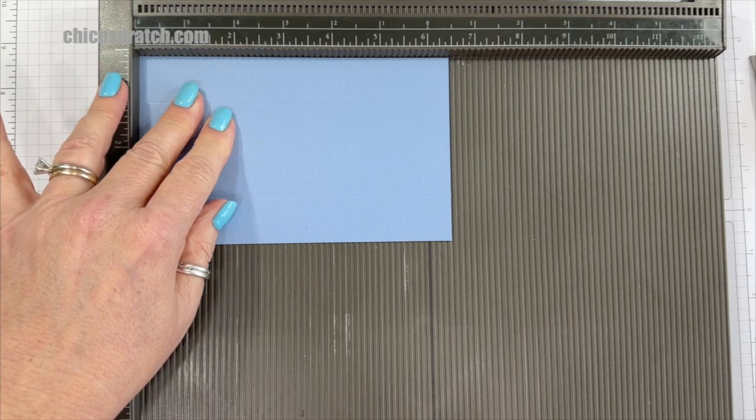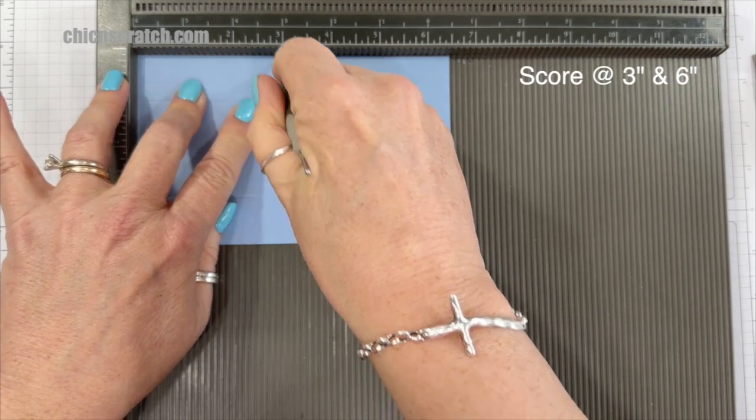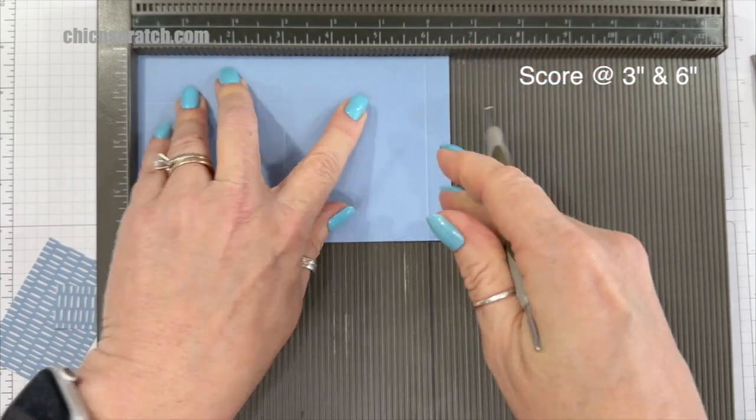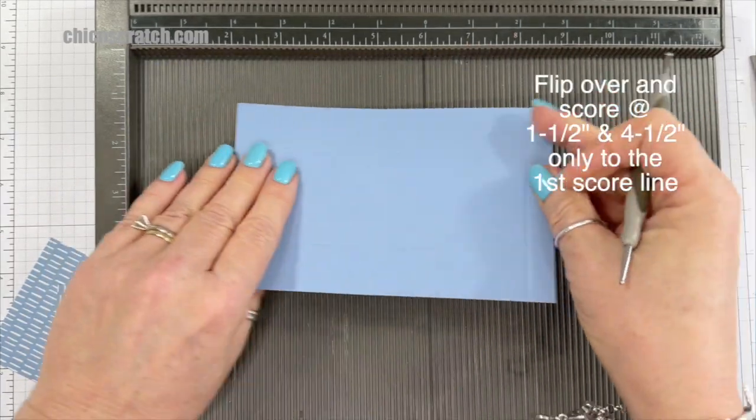On the six and a half inch side, you're going to score it at three inches and six inches, and then flip it over. So I'm just going to flip it up.